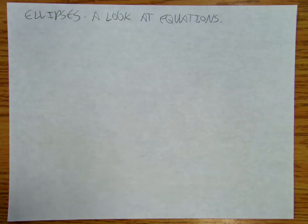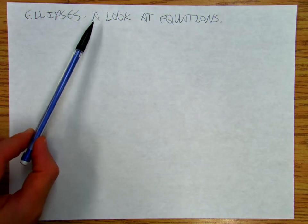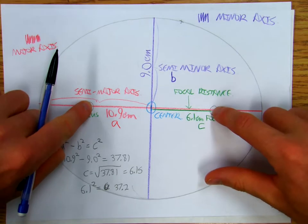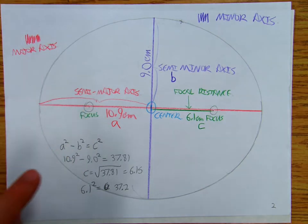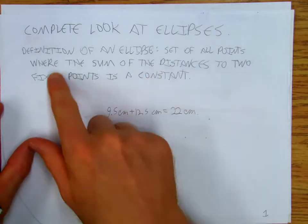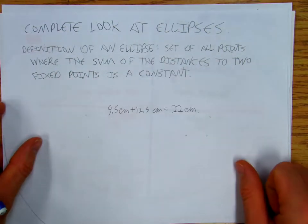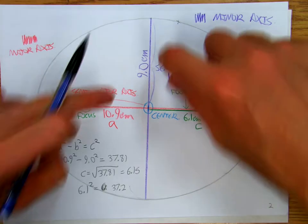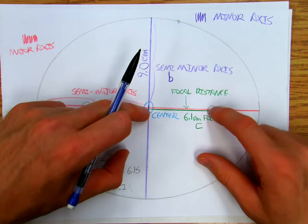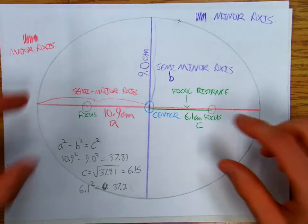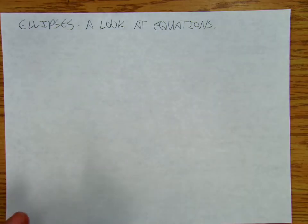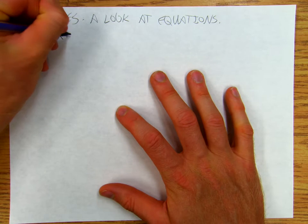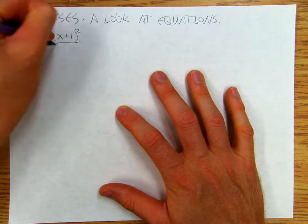So now we're continuing to look at ellipses, and I want to spend more time working with equations. In my previous videos, I set up two foci and looked at the definition that an ellipse is the set of all points where the sum of the distances to two fixed points is a constant. I came up with the ideas of the semi-major axis, the semi-minor axis, the focal length, C, and the eccentricity — all from a graphical standpoint. Now I want to look at equations, so let's start off with an equation in standard form.